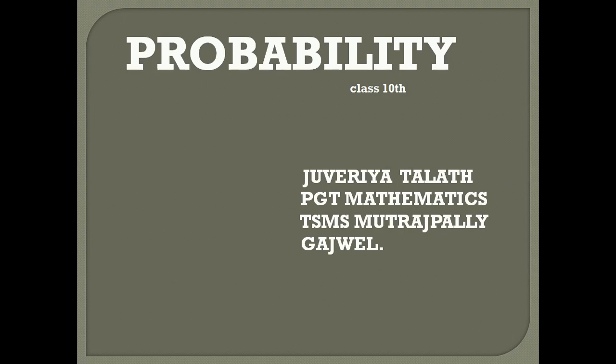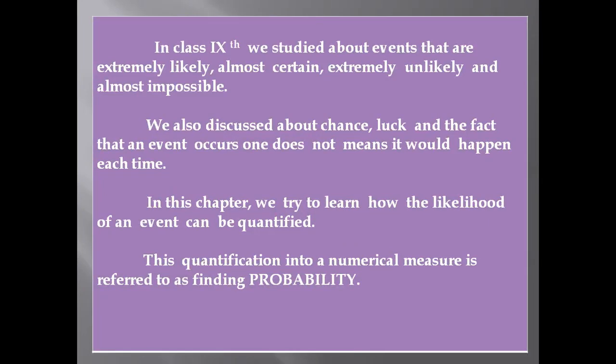In the previous class, in your 9th standard, you have studied the words extremely likely, almost certain, unlikely, and impossible. Extremely likely means there is much chance for it to happen. Certain means we are sure it is going to happen. Unlikely means there is less possibility for it to happen, and impossible is something which is not possible. This is the measurement of possibility, and it can be measured numerically, which is referred to as probability.